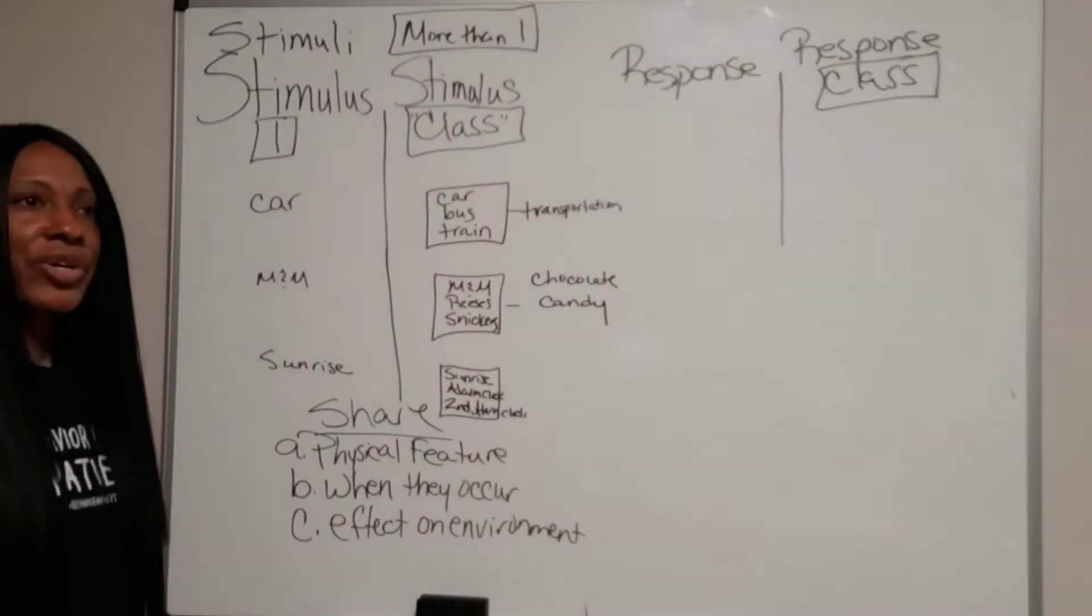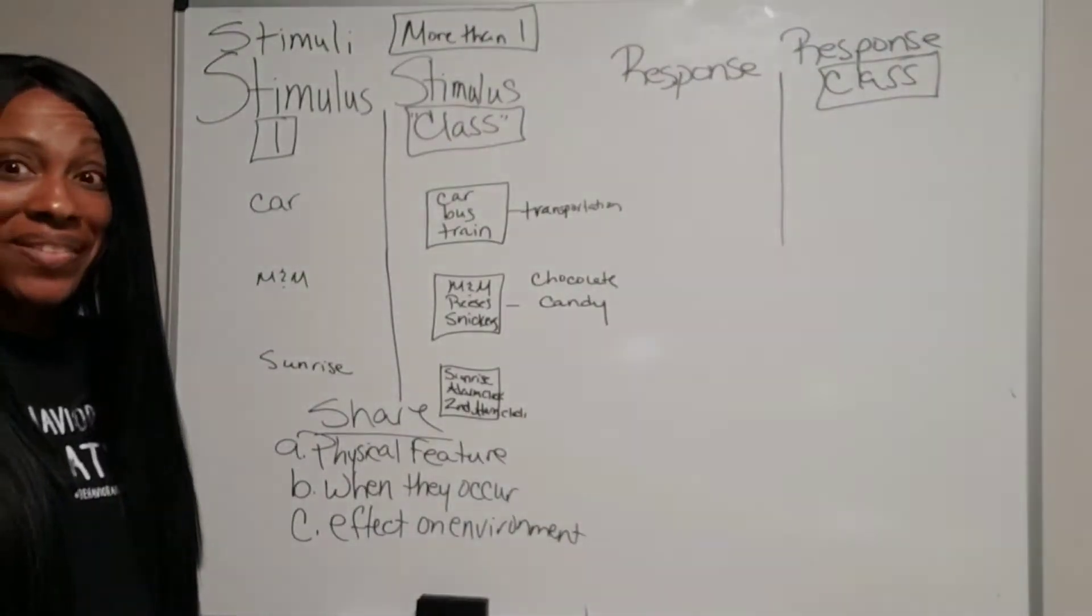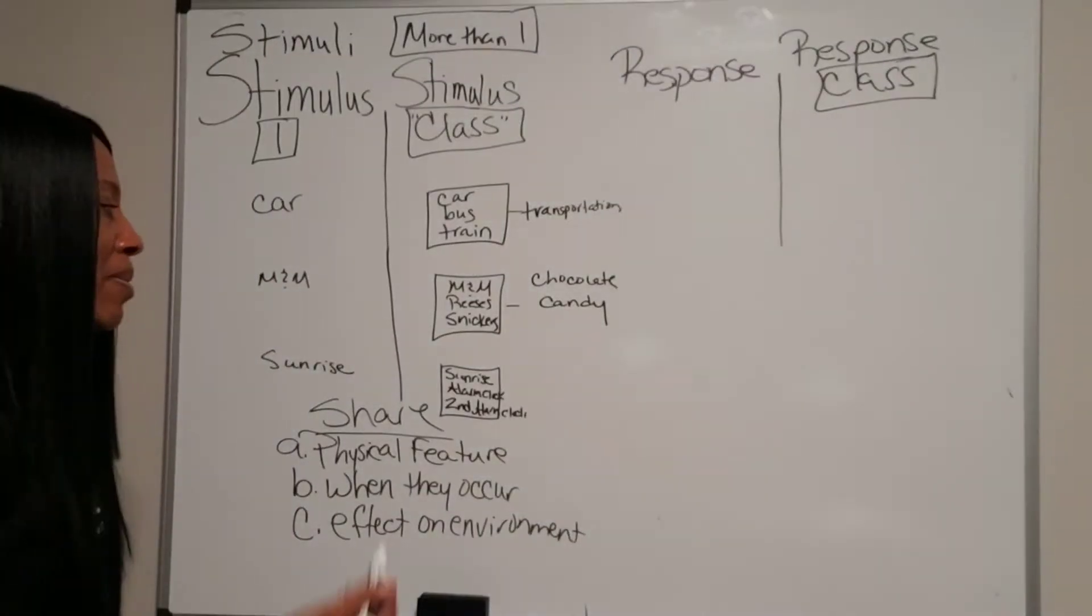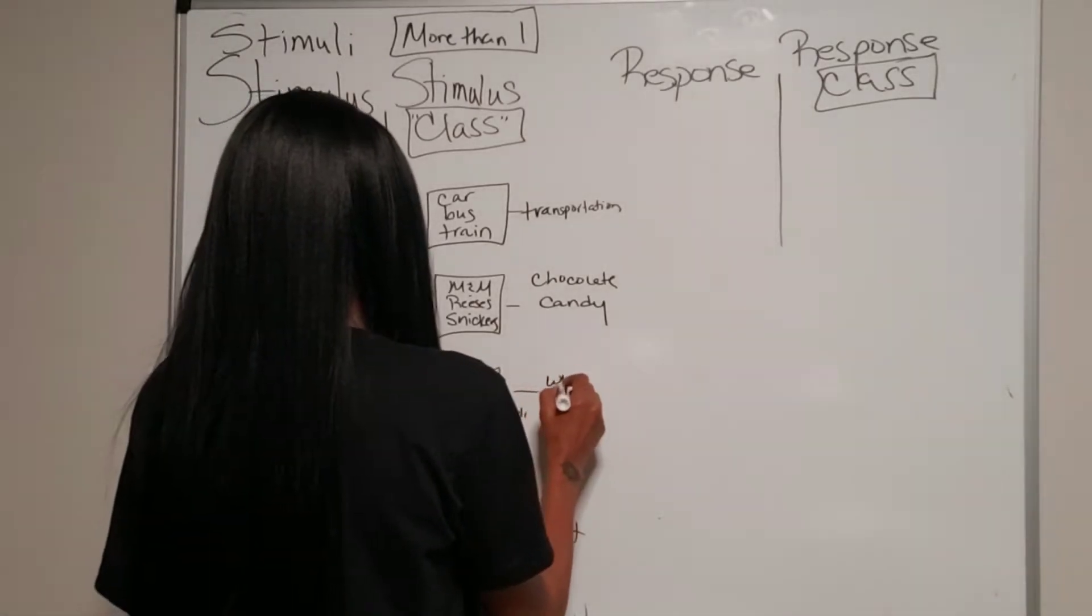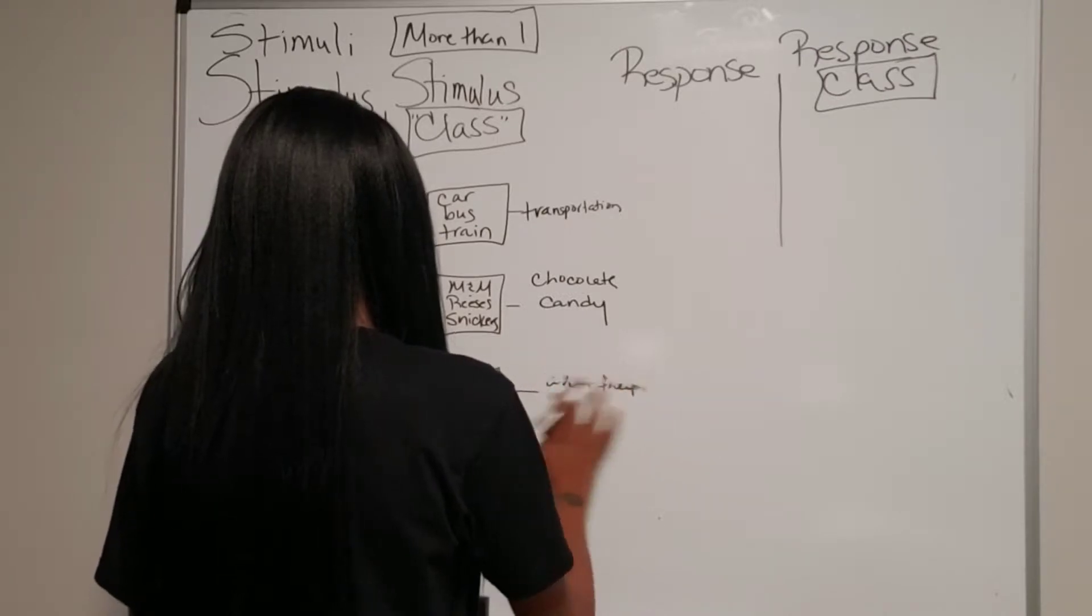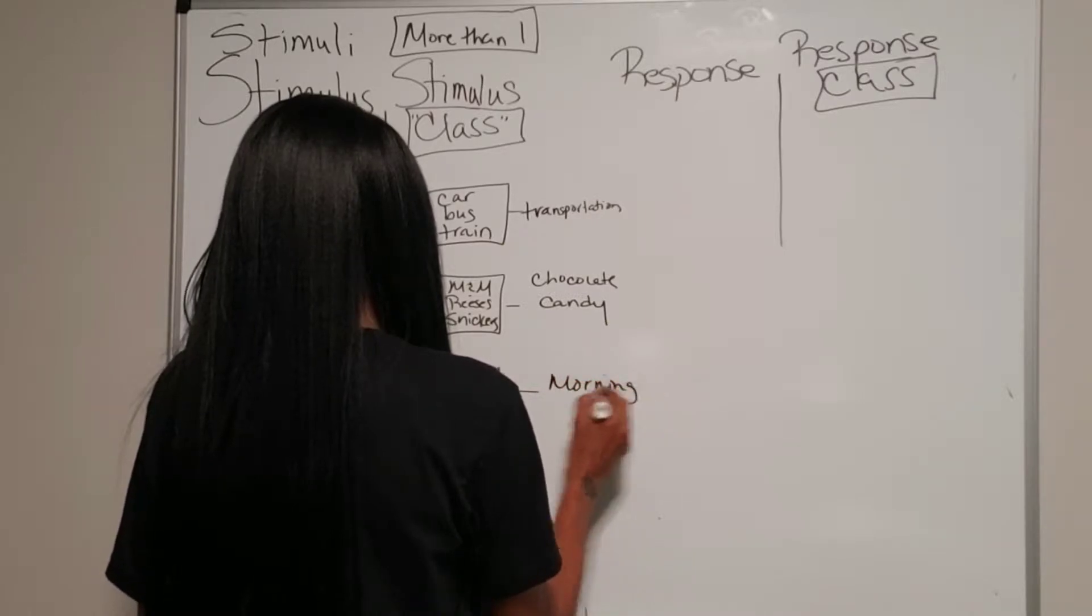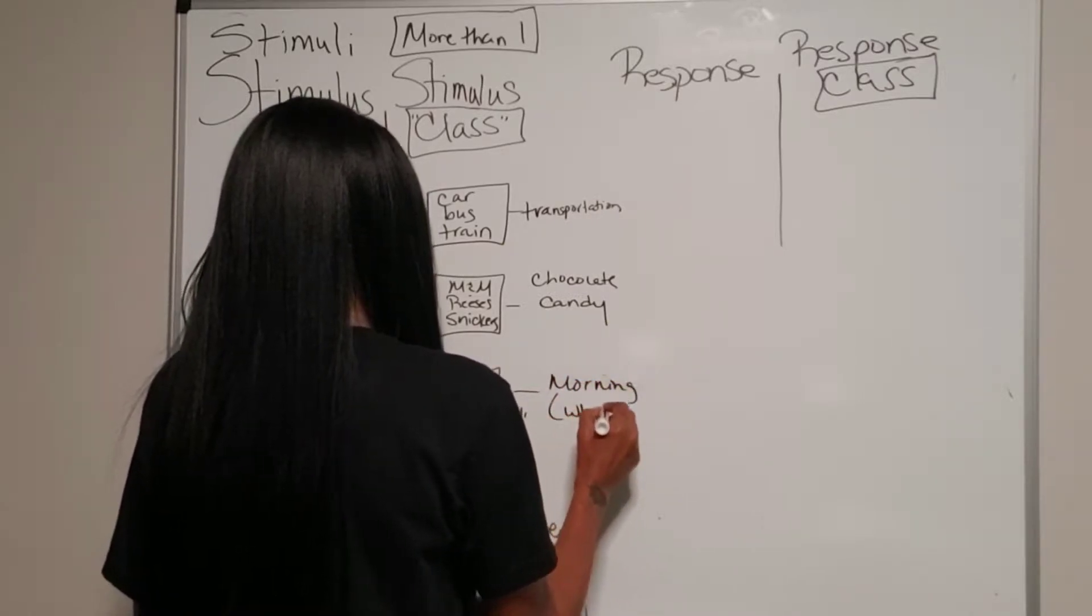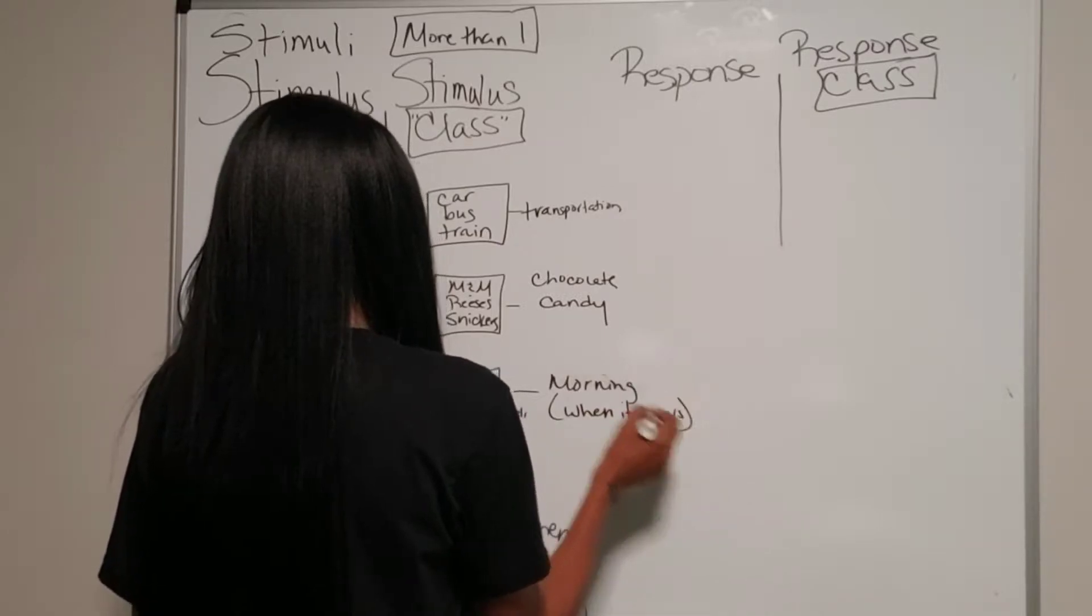Sunrise. So the sun rises, your alarm clock goes off. Of course you turn it off. Then the second alarm goes off and you get up. But all of these occur at the same time. So when they occur, they occur in the morning. All of this stimuli occurs in the morning.